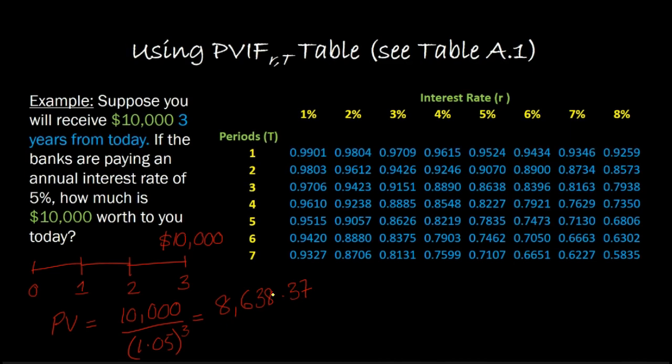The other way of doing it would be to first look at what the present value of $1 will be if we're receiving just $1 three years out at a discount rate of 5%. From the table, that $1 would be worth $0.8638. Then the present value of $10,000 is simply $10,000 multiplied by $0.8638, which gives you exactly $8,638.